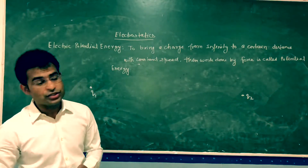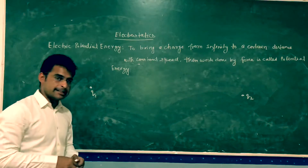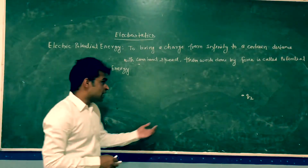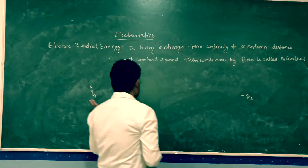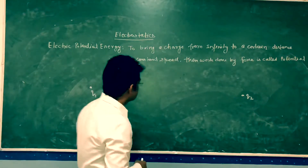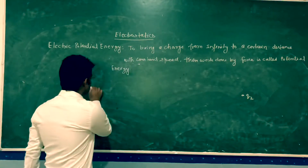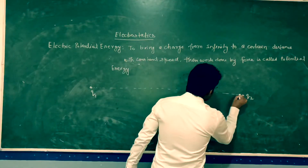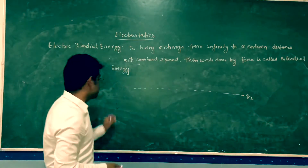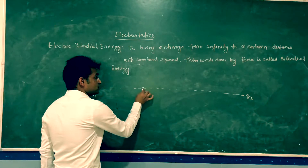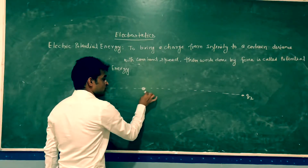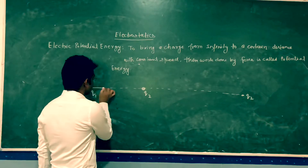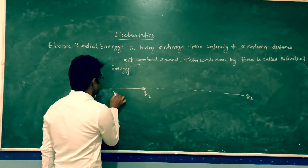To calculate that potential energy, I find the work done and take the negative of work done by the external force. I bring this charge from infinity towards q1, and q2 reaches a point at distance r from q1.